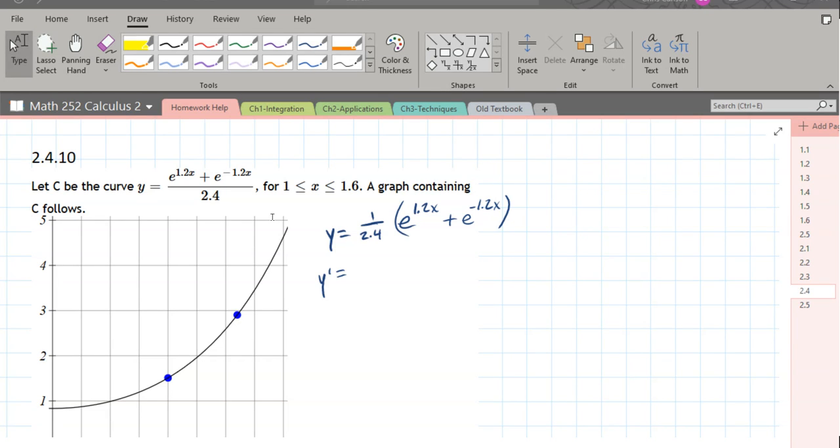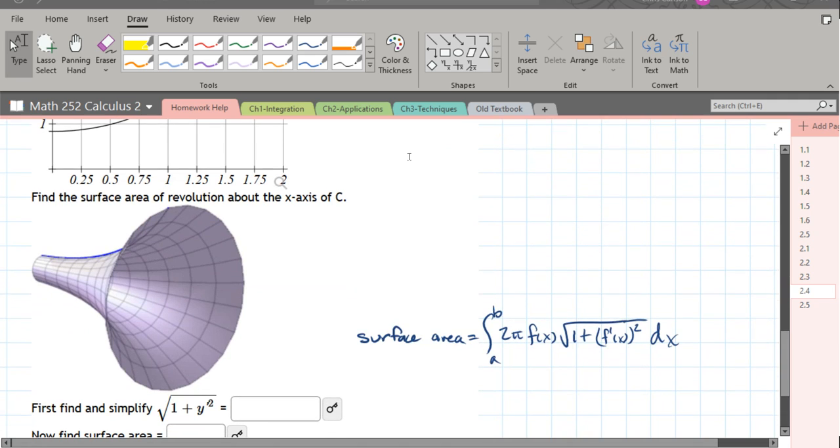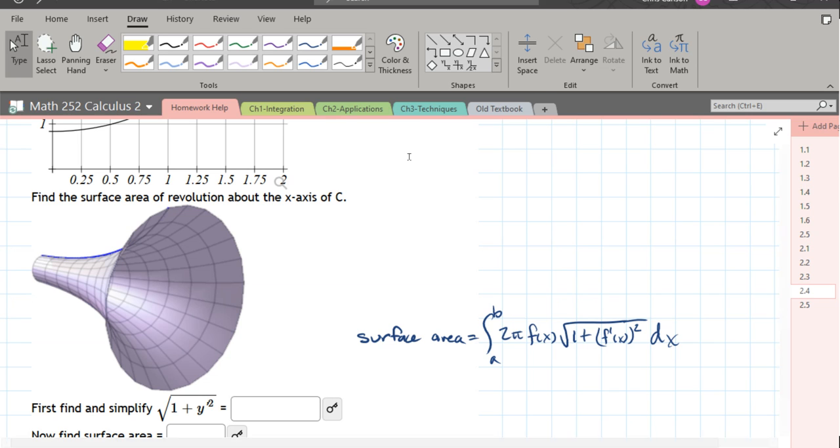We're going to find surface area of this curve here. It's an exponential curve. We're already given the min-max x values. So first thing we need to do is look up the surface area formula. This is in the book, page 177, and it's written down right here.